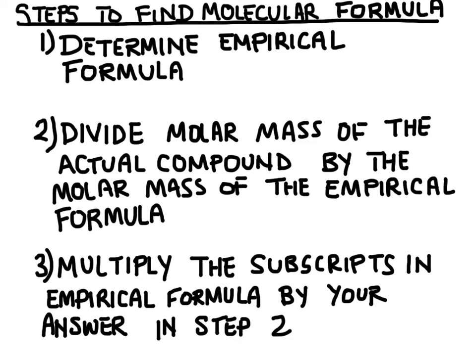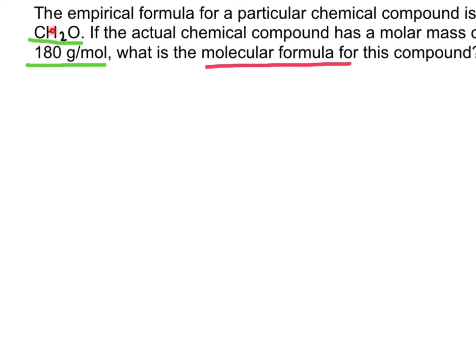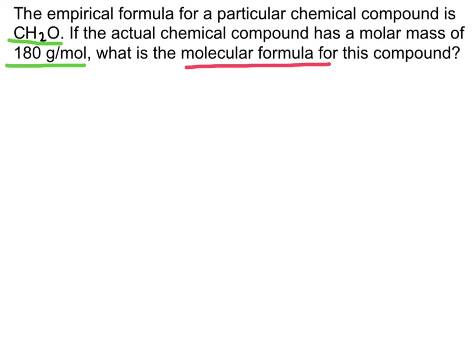Second step is to divide the molar mass of the actual compound. That was given to us. It has to be given to us in the question. We're going to divide that by the molar mass of the empirical formula. So I'll show you how to do that in a minute. And then finally, we're going to multiply the subscripts of the empirical formula by our answer from step 2. And what I mean by that is these subscripts right here. You can see we have 1 for the carbon. If you don't see anything, we just assume there's 1 there. And then 2. We just divide everything by our answer from that first step. So let's go ahead and do that.